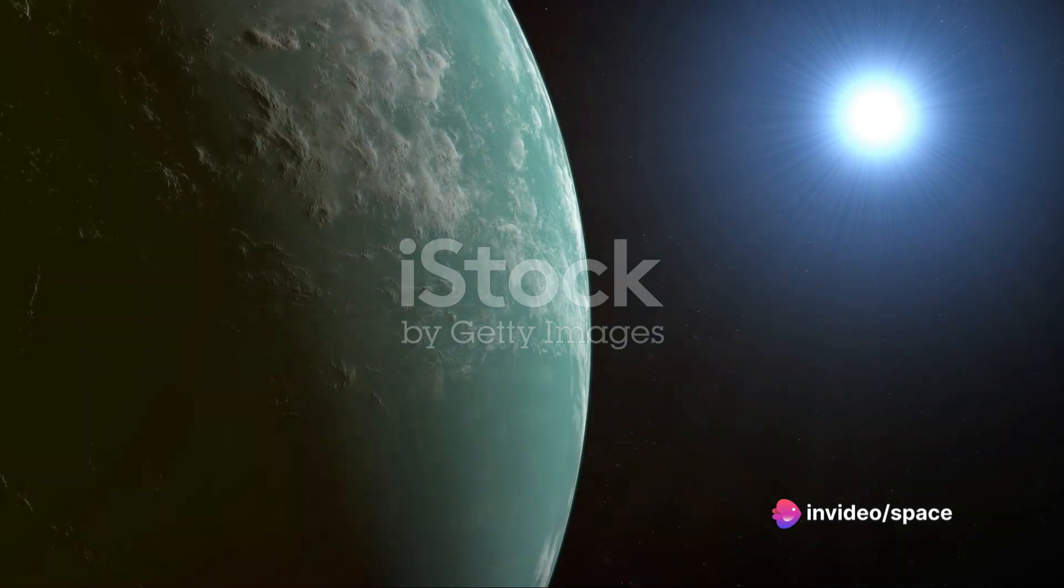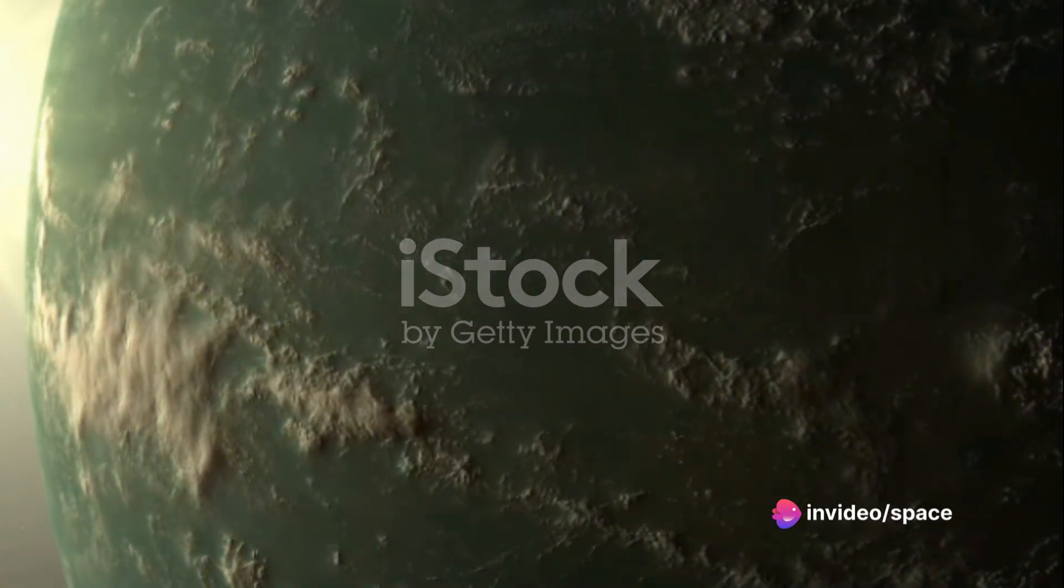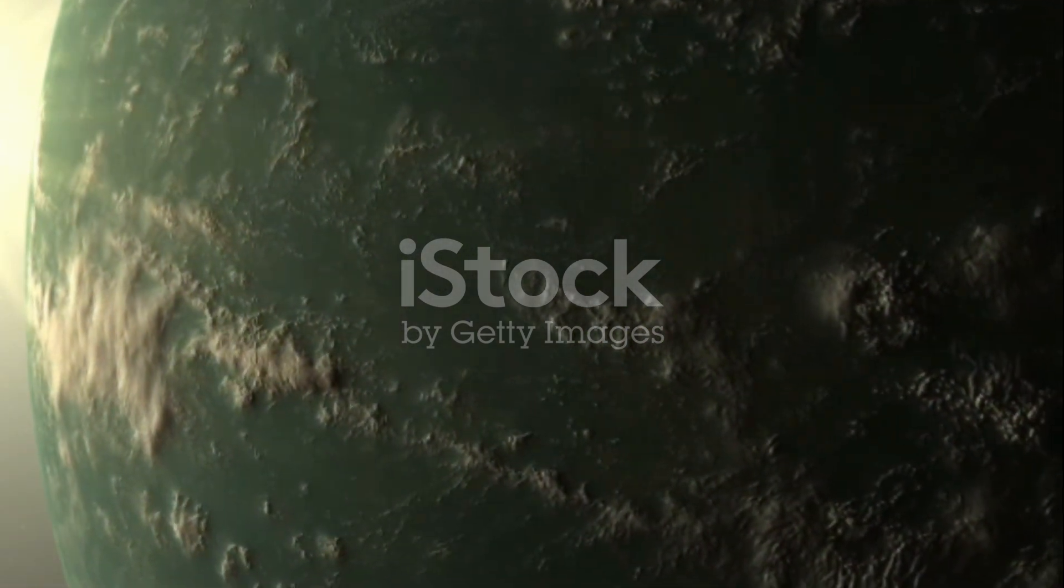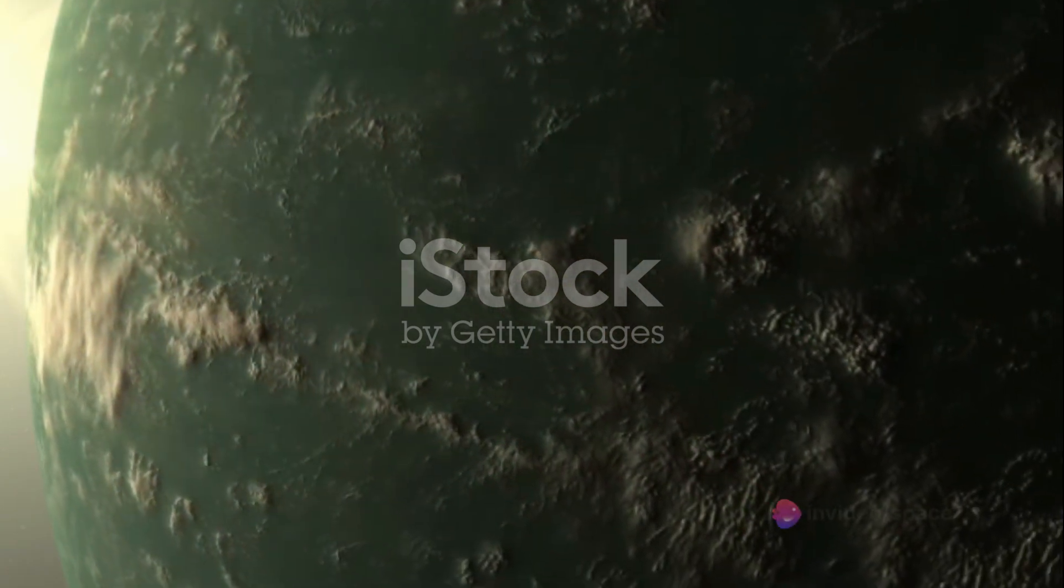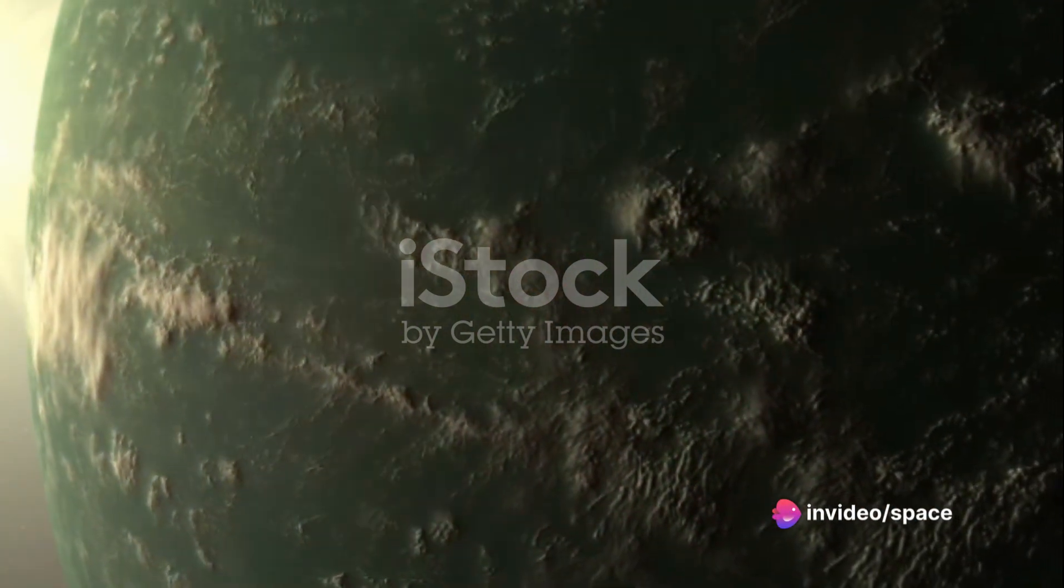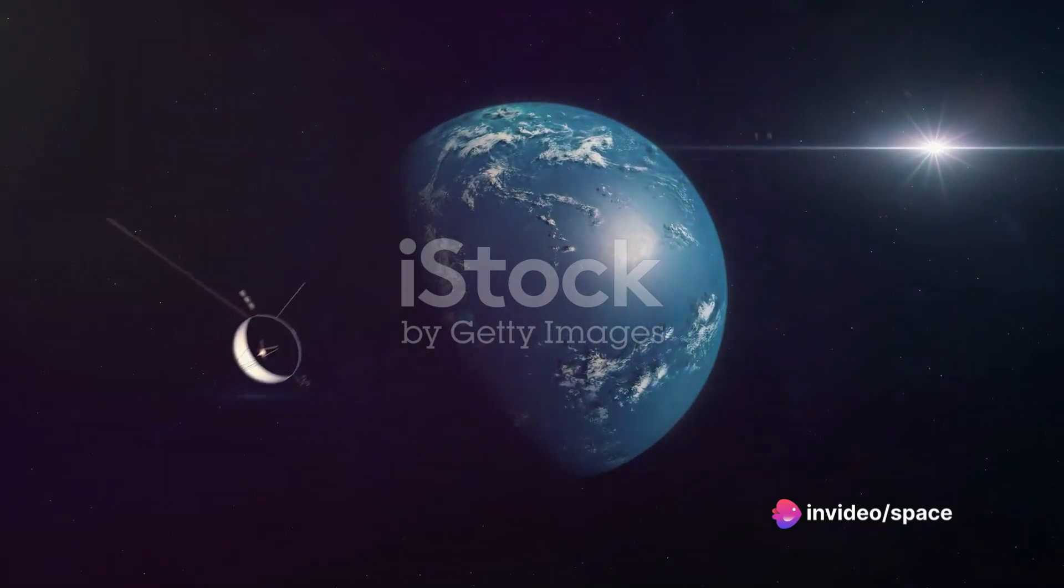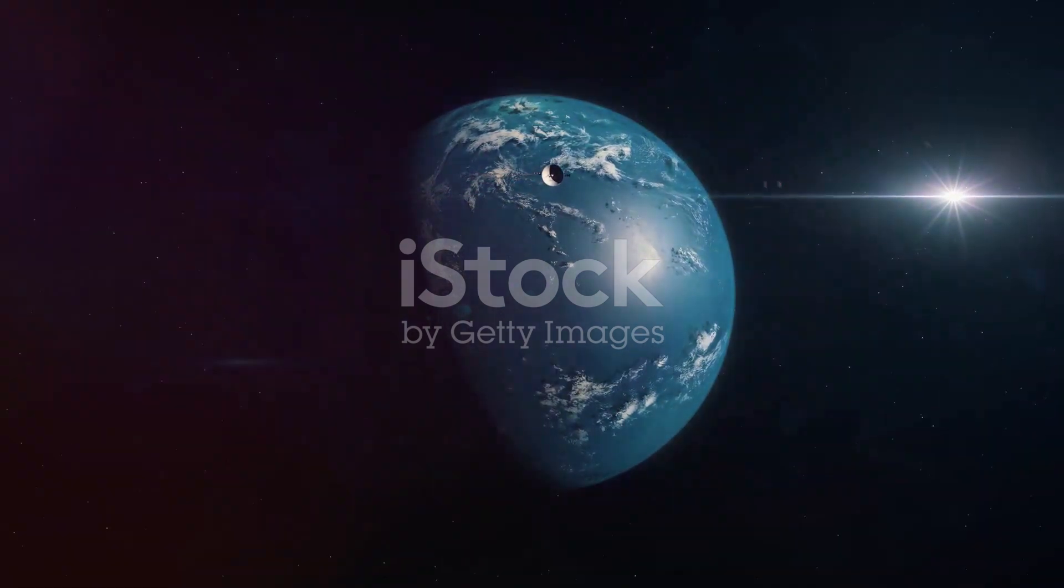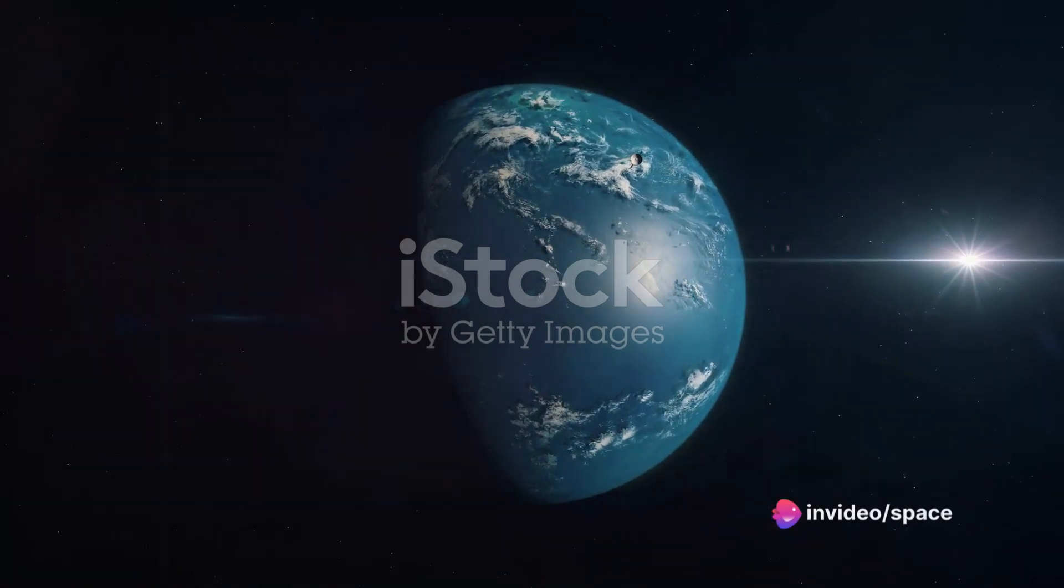Now this water world isn't orbiting just any star, it's orbiting Kepler-22, a star similar to our sun. However, there are some differences. Kepler-22 is slightly smaller and cooler than our sun. But don't worry, this doesn't mean Kepler-22b is a frozen wasteland. Kepler-22b orbits its star at just the right distance, placing it in the habitable zone, the Goldilocks zone, where conditions are just right for liquid water to exist. Not too hot, not too cold.